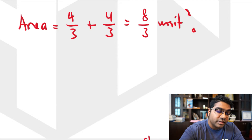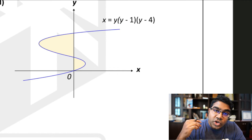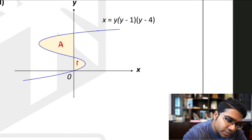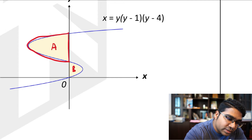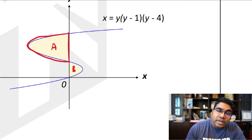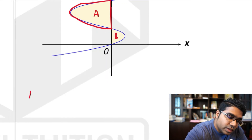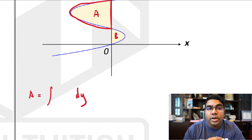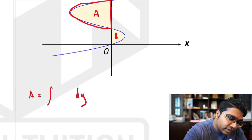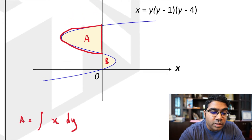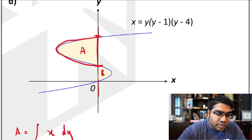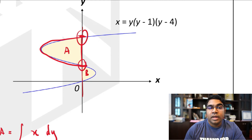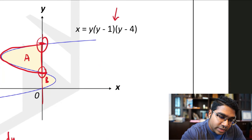Now let's look at an area between the curve and the y-axis. We apply the same principles. Check the boundaries first — let's call them A and B. For region A, it is bounded by the curve and the y-axis, so we integrate with respect to y. When integrating with respect to y, we integrate x dy. We need to find the limits, which will be on the y-axis. These are the y-intercepts; the curve is already in intercept form.